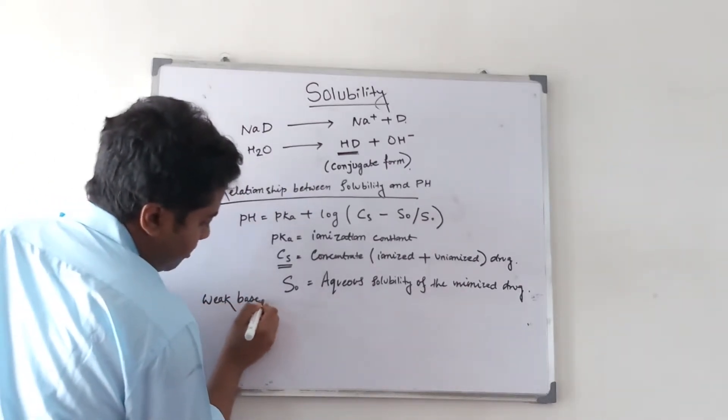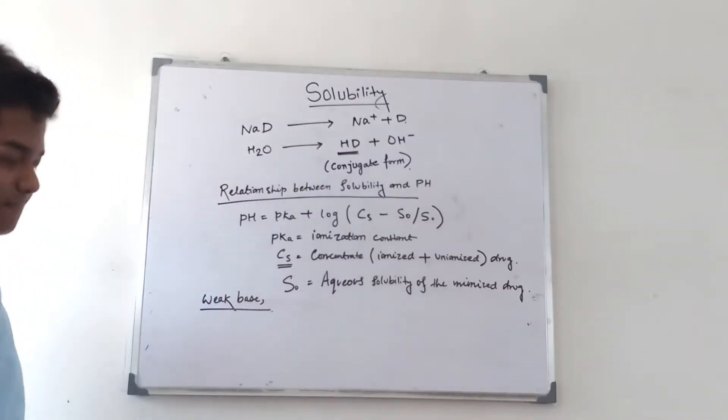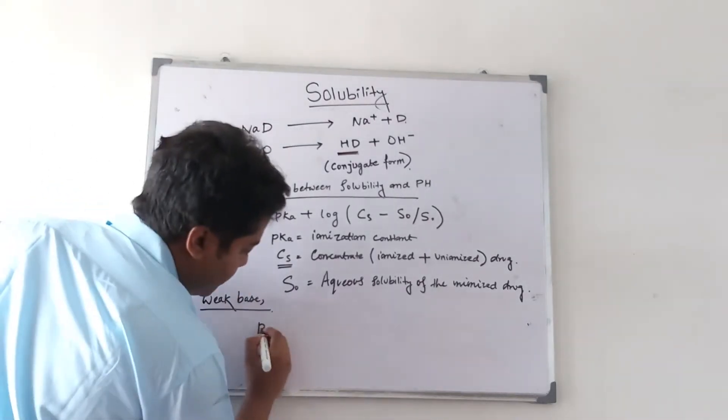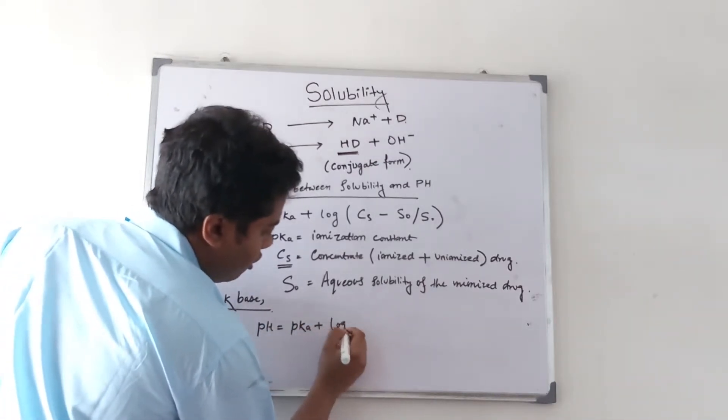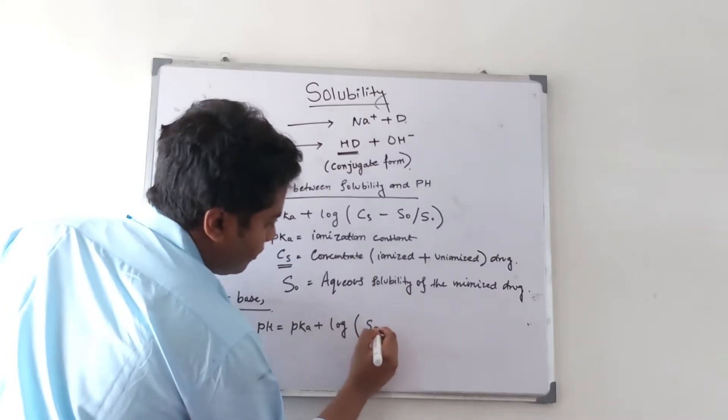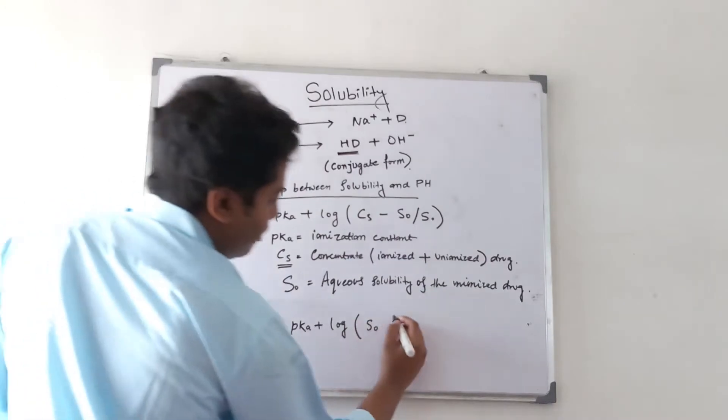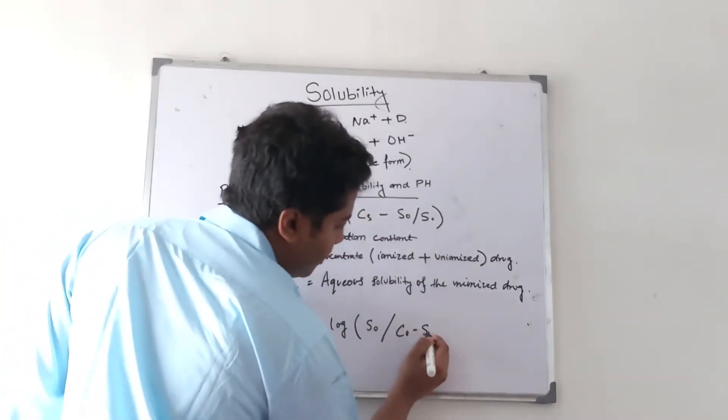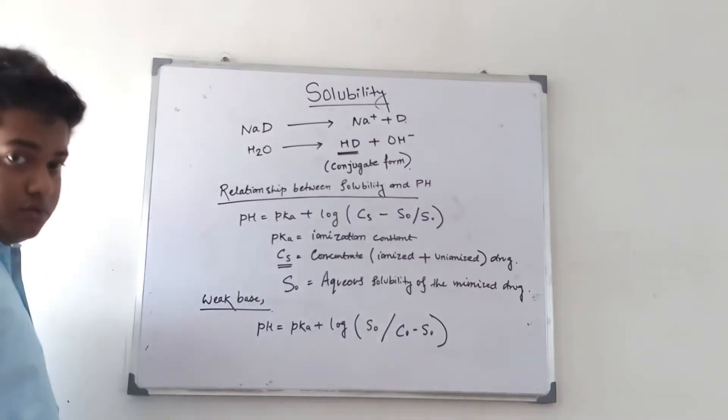In case of weak bases, pH equals pKa plus log of S0 divided by (Cs minus S0). This is in case of weak bases.